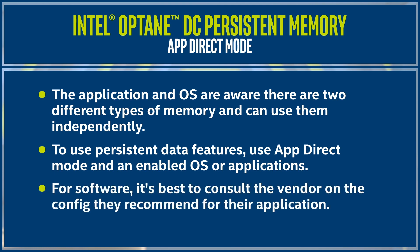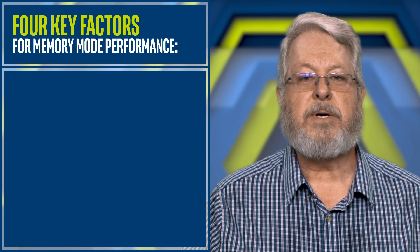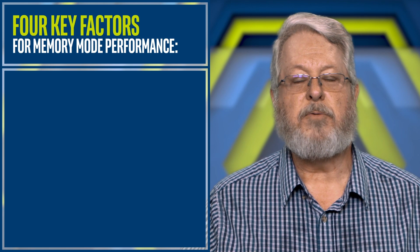For software that uses App Direct Mode, it's best to consult with the vendor for the configuration they recommend for their application. Most of the rest of our talk will be about how to get the best performance in Memory Mode. There are four factors that we'll consider for best performance.